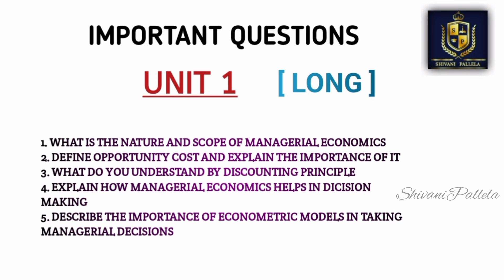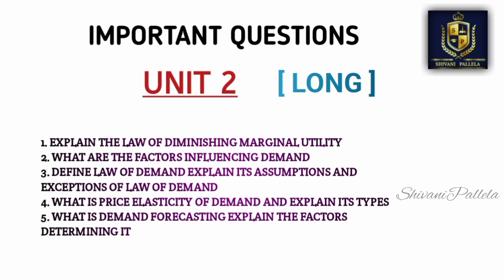For the long important questions in Part B, I have given five questions per unit — prepare all of them. I have already reduced the list from the many questions available, but to score full marks you need to learn all five. From Unit 1: nature and scope of managerial economics, opportunity cost and its importance, and managerial economics are important. From Unit 2: law of diminishing marginal utility — which you may have studied in intermediate commerce — factors influencing demand, law of demand with its assumptions and exceptions, and price elasticity of demand with different types. You need to write answers along with diagrams.